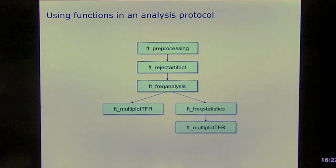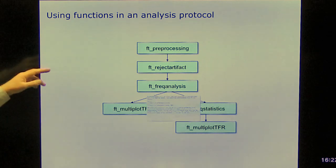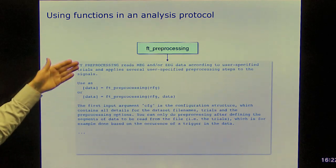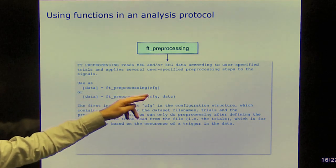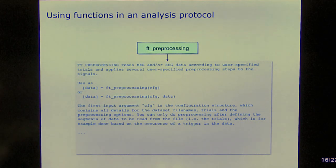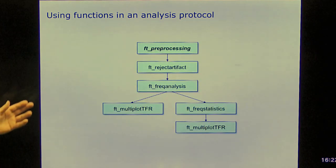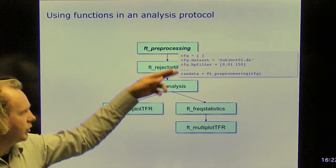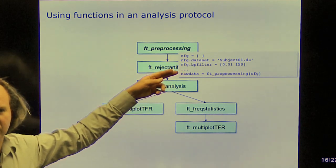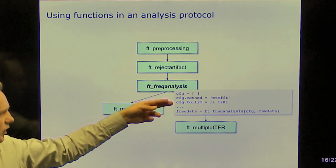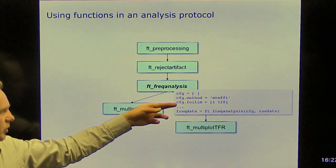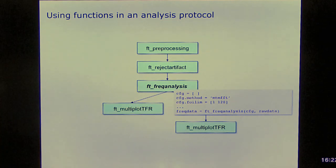So what we do is we take those functions and we put them in an analysis pipeline or an analysis protocol. So we would start with FT preprocessing. FT preprocessing, this is the help of the function. It can be used to read the data according to the configuration. It can also be used to preprocess data that's already in memory. So what we would do is we would call the function with such a configuration, we would specify the dataset, we would specify filter settings, then we would call the function. And then we would do frequency analysis where we would specify that we would want to use multi-taper, fast Fourier transform, specify the frequency of interest limits, then we would call the function. So that's basically how you build such a script.